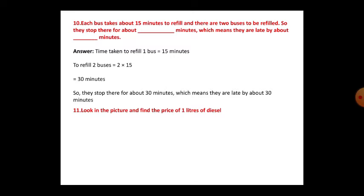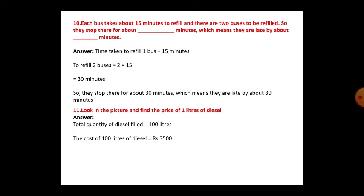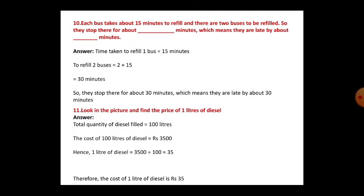Look at the picture and find the price of one liter of diesel. One liter of diesel — they filled 100 liters. Total quantity of diesel filled is 100 liters. The cost of 100 liters of diesel is 3500. So you divide 3500 by 100, which gives 35. The price of one liter of diesel is 35 rupees.